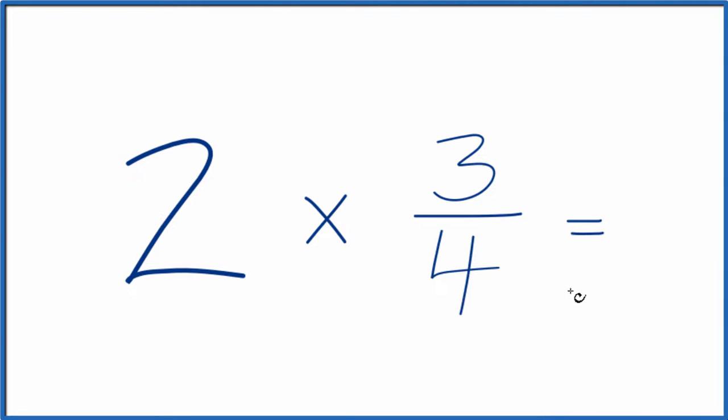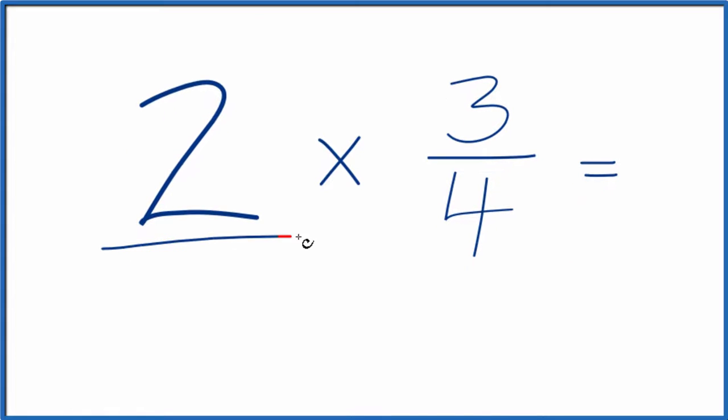The best way to think about this is to take 2 and call it 2 over 1, because 2 divided by 1 is just 2. But now we have this as a fraction.